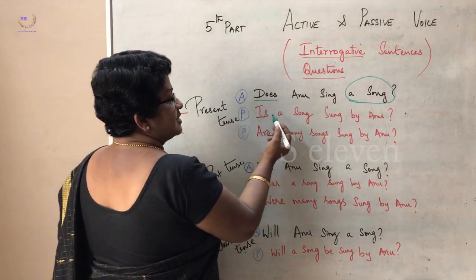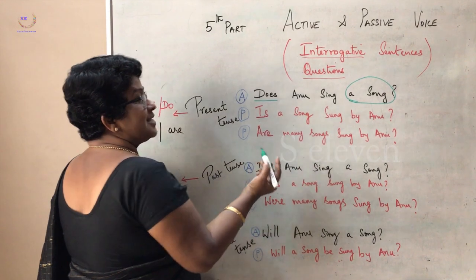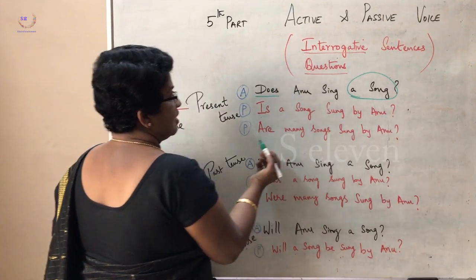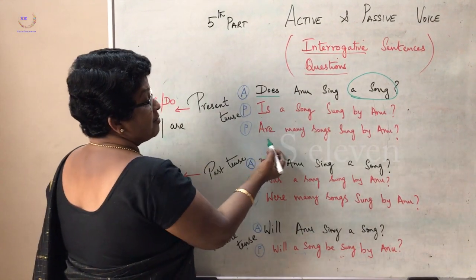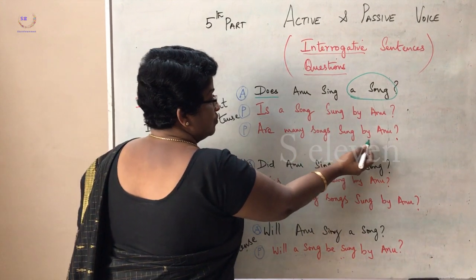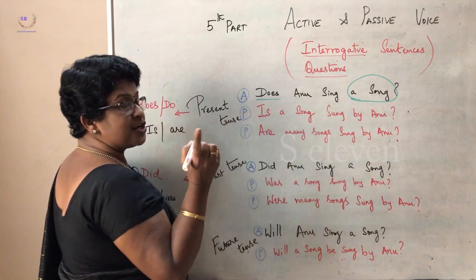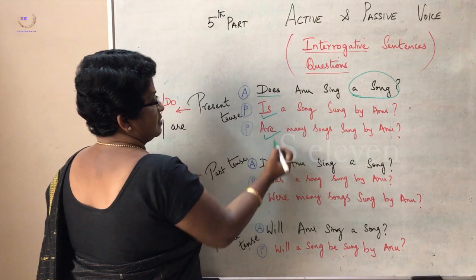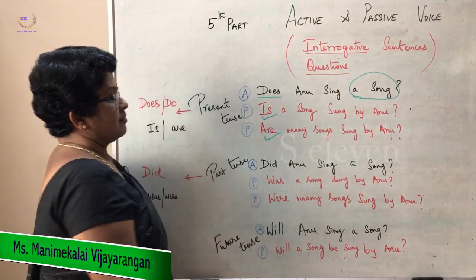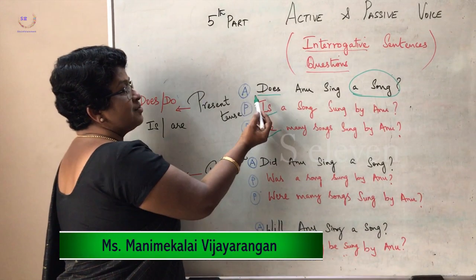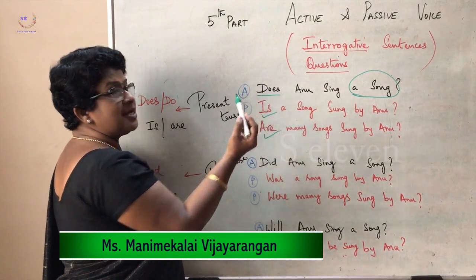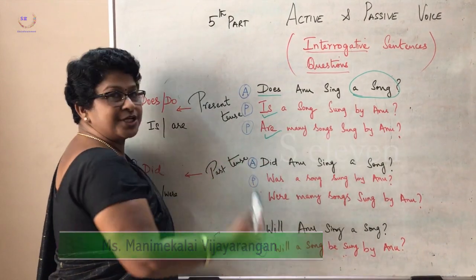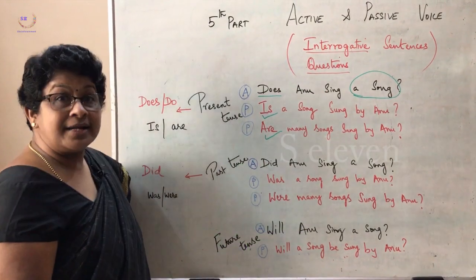Similarly, if the question is: Does Anu sing many songs? Then: Are many songs sung by Anu? Make sure the verb comes in the front. So if you see any question with does, immediately think about using is or are based on the object.